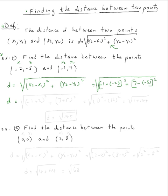Negative one minus negative two is negative one plus two. Let me do it in two steps: (negative one plus two) squared plus (seven plus five) squared, all under the square root. Negative one plus two is one, so one squared; seven plus five is twelve, so twelve squared. That gives us the square root of one plus one forty-four, which is the square root of one hundred forty-five.